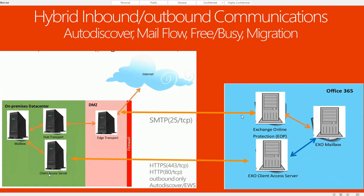The client access server communicates directly to the client access server on Exchange Online over HTTPS port 443 and port 80. It's inbound only. Client access servers must have autodiscover and EWS enabled. So it's a bi-directional communication.